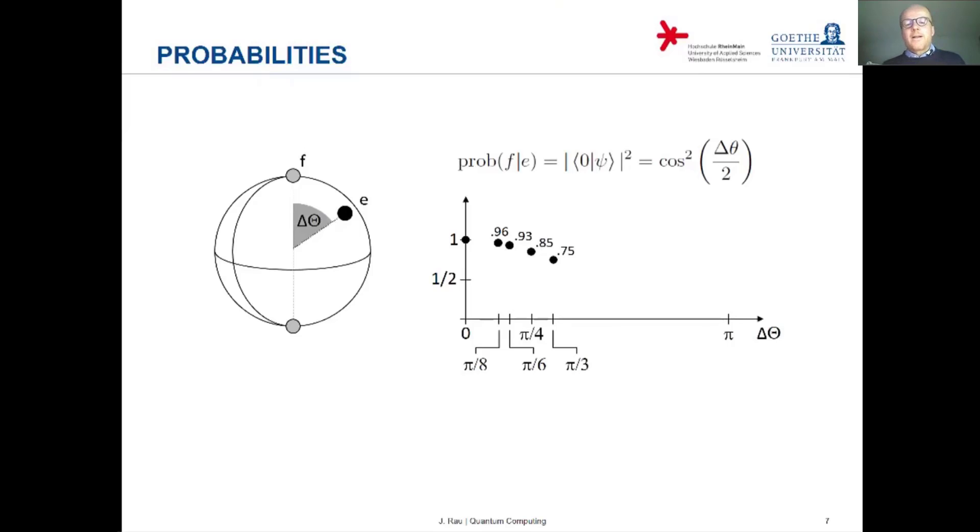If you go a third of a semicircle, then the probability is three quarters. If you go half the semicircle, so basically your E lies on the equator of the Bloch sphere, then the probability is one half. And finally, if you go all the way down to the south pole, then obviously it's certain that the measurement will yield the south pole and the probability for the north pole becomes zero.